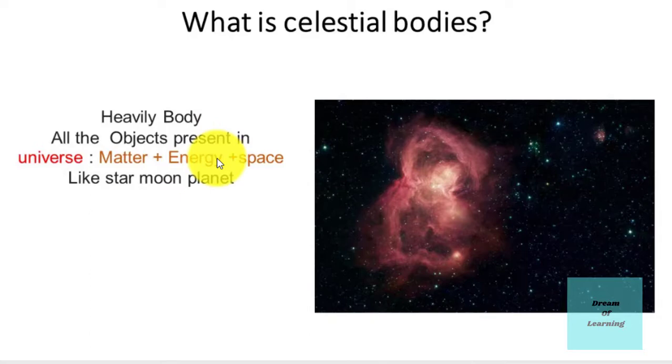Like stars, moon, and planets. Agar hum apne solar system ki baat kare toh nine planets, asteroids, meteoroids and sun, all of the satellites and everything are called the celestial bodies.